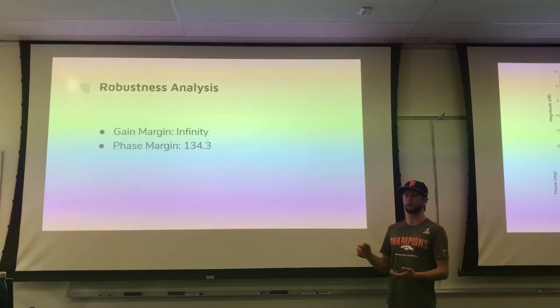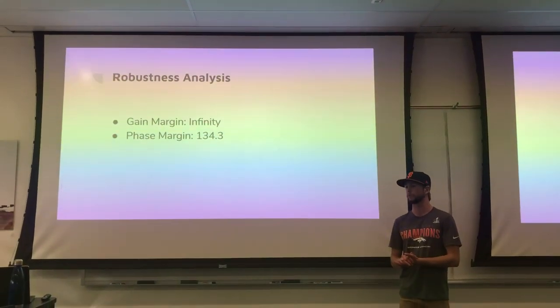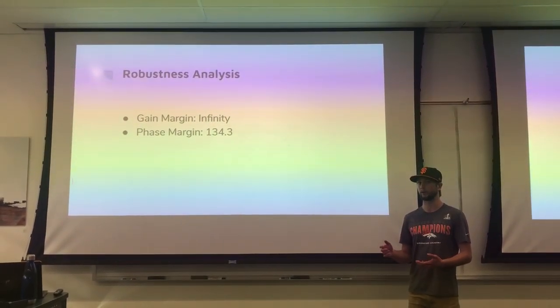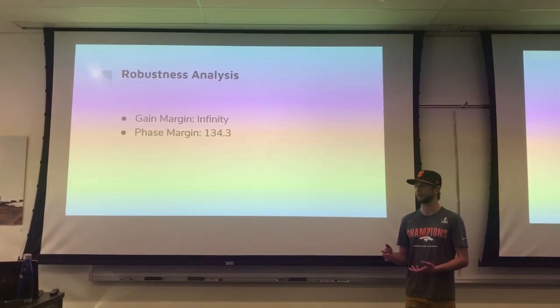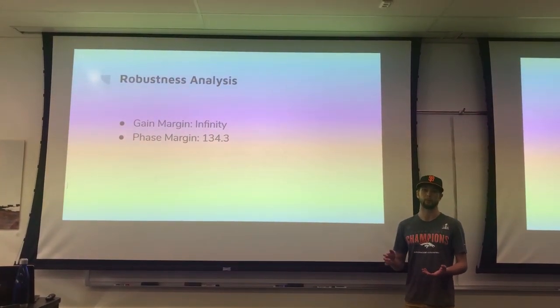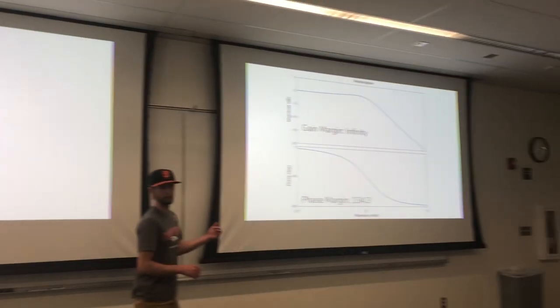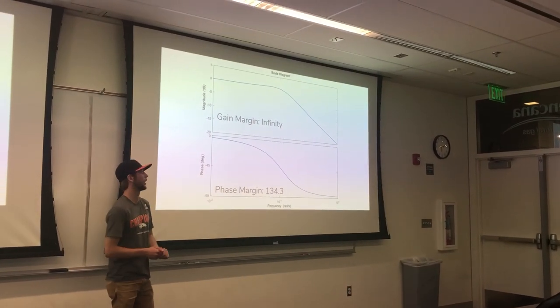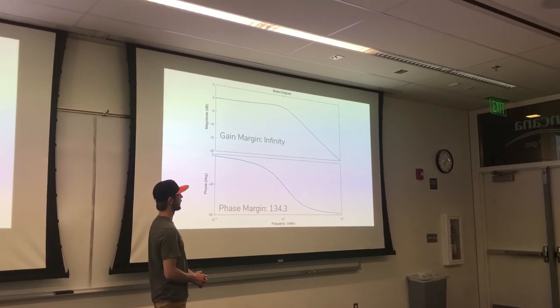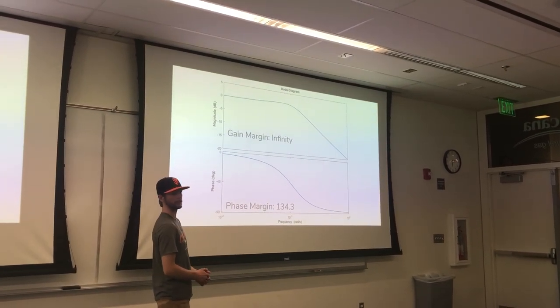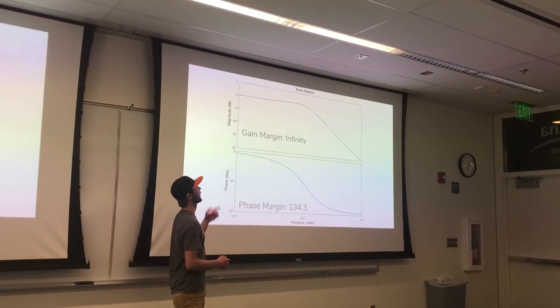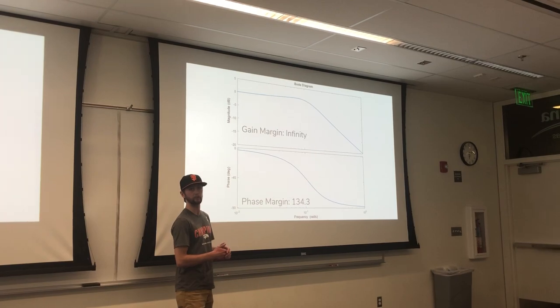The robustness of our system is also really important. How much your gain can change and how much time delay you can have with the system remaining stable. We calculated that here with the Bode plots. We calculated the phase margin by finding the crossover frequency of the Bode diagram, which is when the magnitude crosses zero decibels, and followed that down onto the phase diagram.